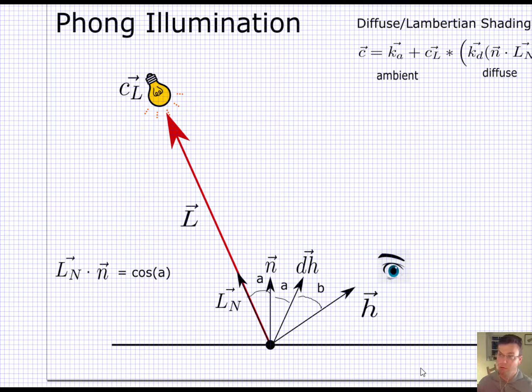So let's assume that dh is a unit vector and h is a unit vector. So what we'll do is we'll just fall off as the cosine of this angle again. And so since these are unit vectors, that's just going to be h dot dh. So that's the cosine of the angle b.